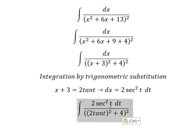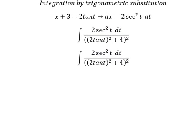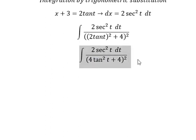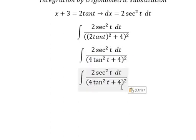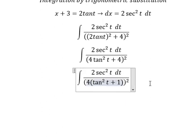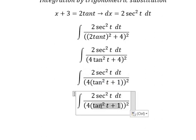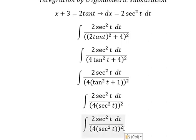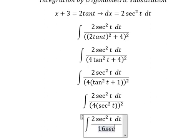The denominator becomes 4 tan² t + 4, which factors as 4(tan² t + 1), and this is 4 sec² t. So we have the power 2, giving us 4² = 16, and sec² t squared gives sec⁴ t. So we have 16 sec⁴ t in the denominator.